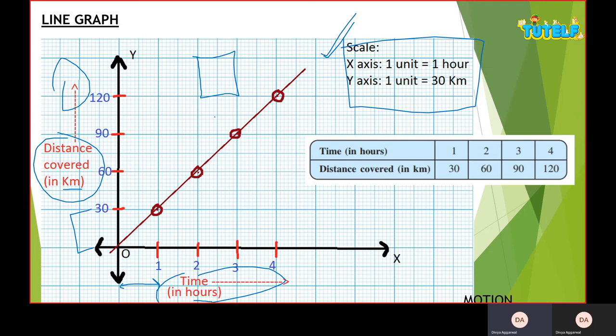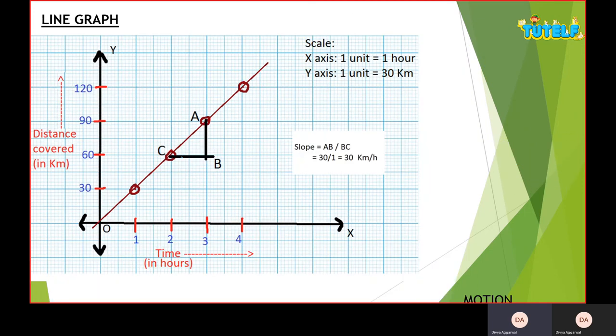I've put in this time-distance graph here. Time is 1, 2, 3, 4 hours - a uniform gap of one hour. Distance is 30, 60, 90, 120 - there is a uniform graph. You need to analyze if there is not a uniform graph and make sure the graph represents uniform distance. Now I'll find the slope.